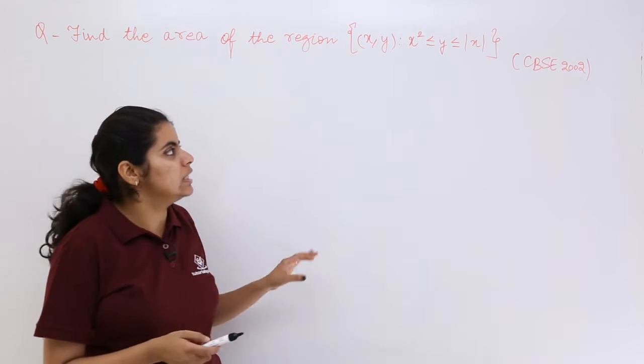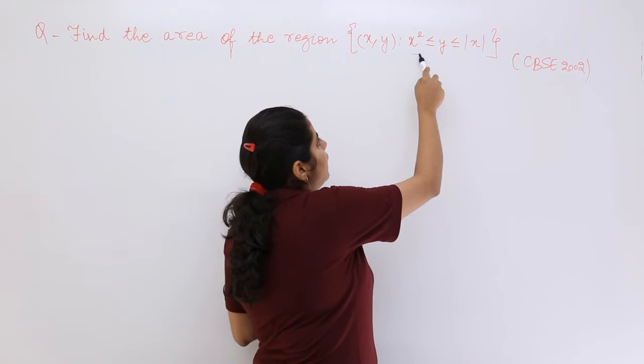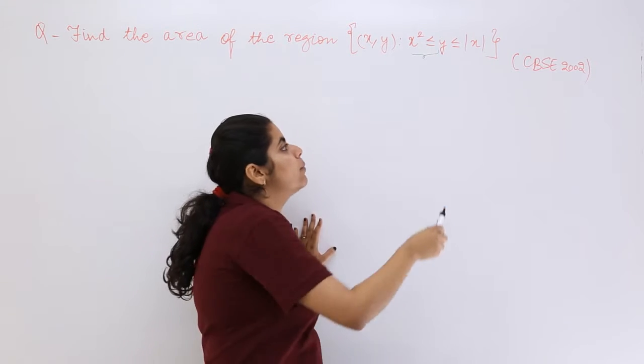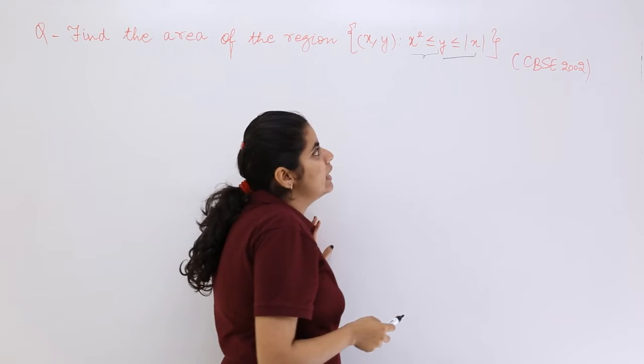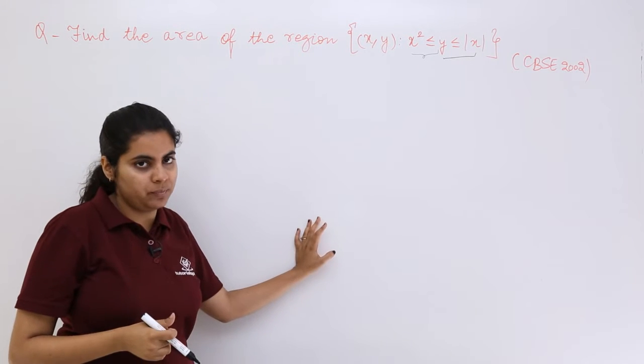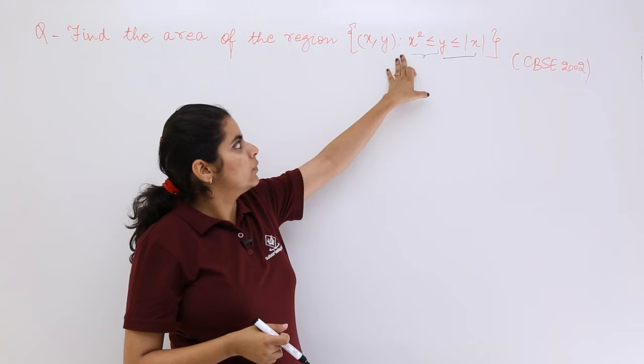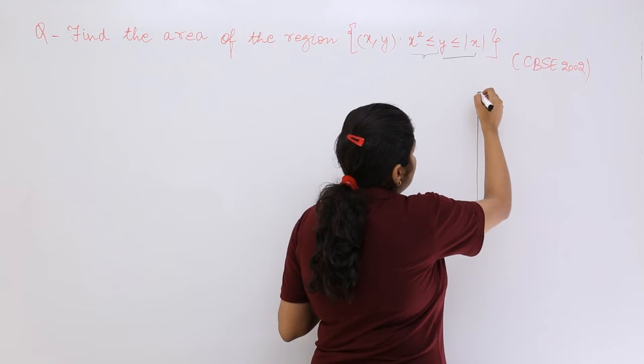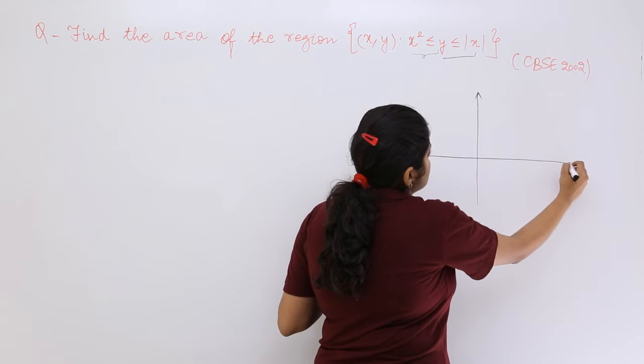As you can see here this part is fine. We are not concerned much with x² ≤ y, but what will trouble us would be this y ≤ |x|. Don't worry. First see x² ≤ y means a case like x² = y.